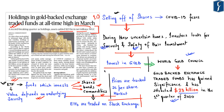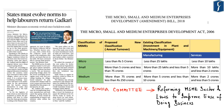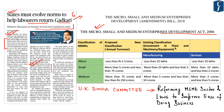This news on gold-based exchange traded funds is important from your prelims point of view, covered under Indian Economy in prelims and GS Paper 3 in mains. The next news appears on page number 6: 'States must evolve norms to help labourers return — Minister discusses economic revival once lockdown ends.' The Union Minister for Micro, Medium and Small Scale Enterprises highlighted that the flight of migrant labour from cities is a serious issue, and it is up to states to frame guidelines for their return. The MSME sector employs nearly 11 crore people and is labour intensive. You must know about the Micro Small and Medium Enterprises Development Act of 2006, which provides for classification based on investment in plant, machinery and equipment.